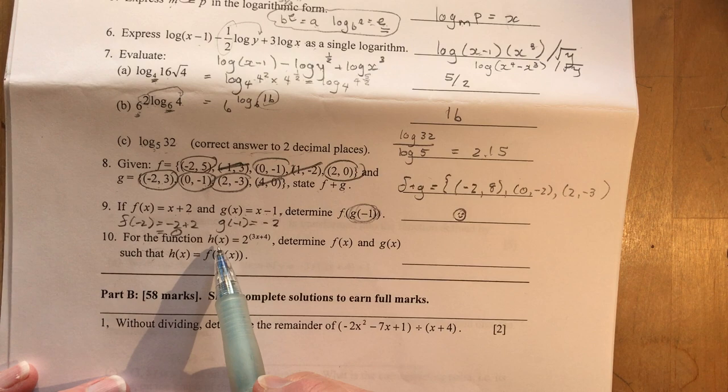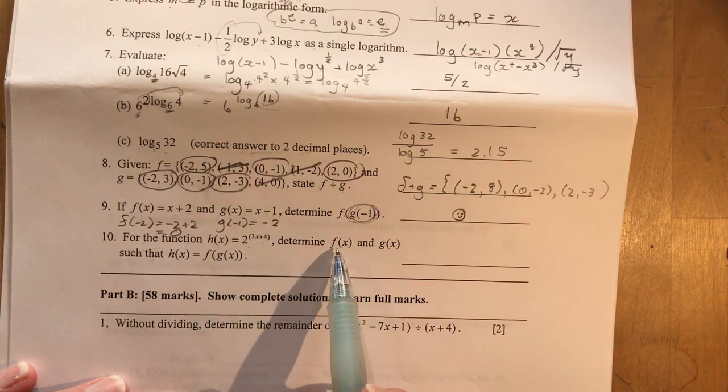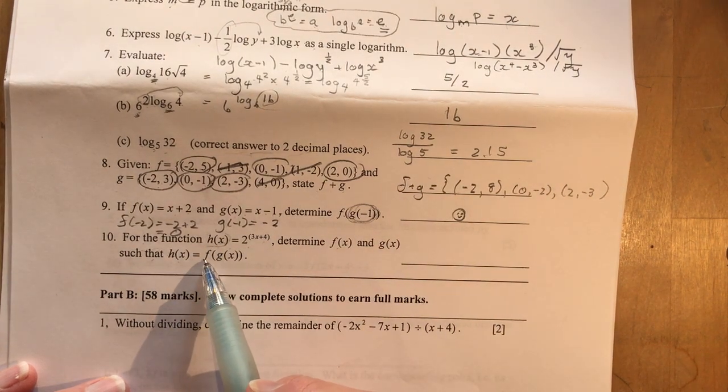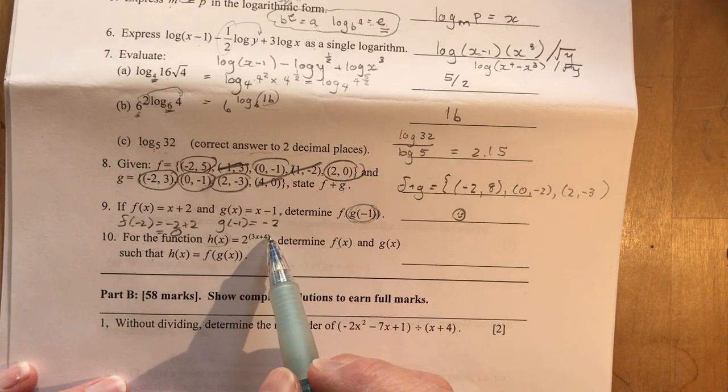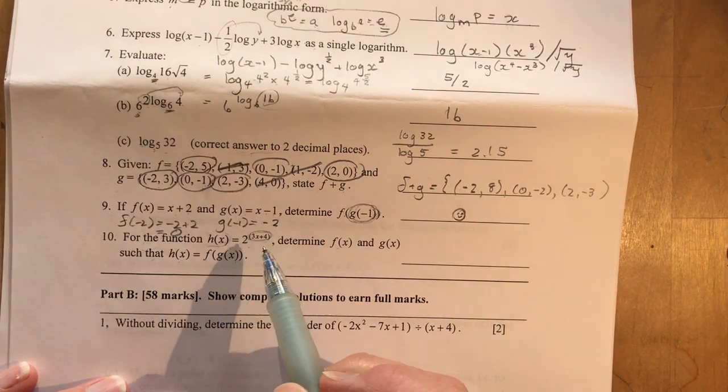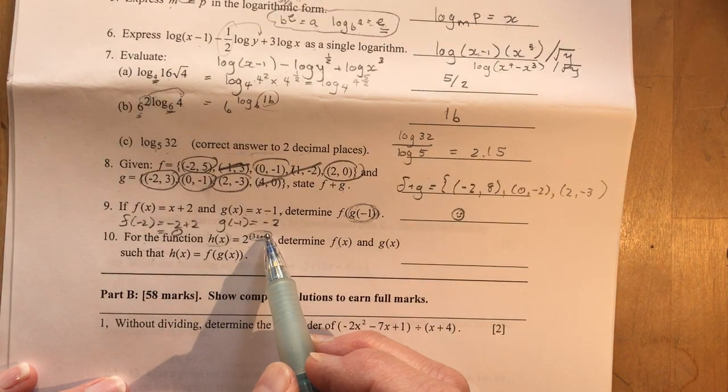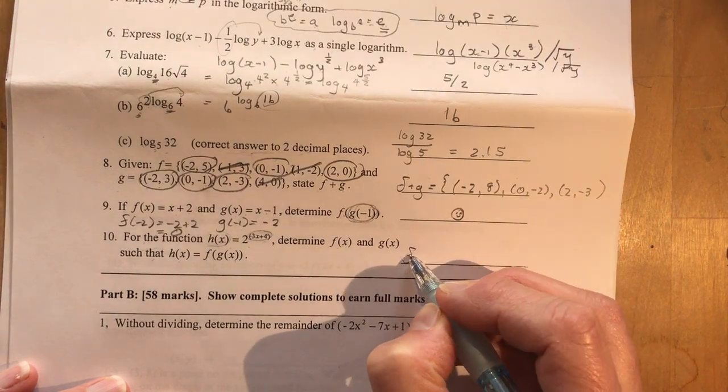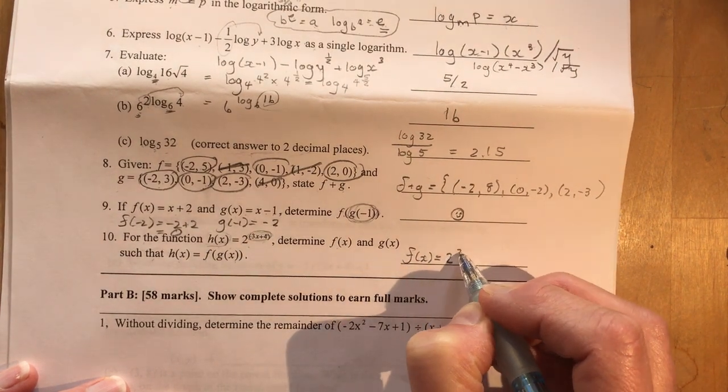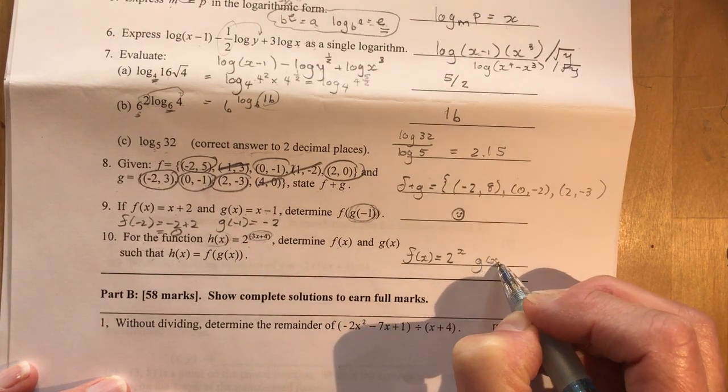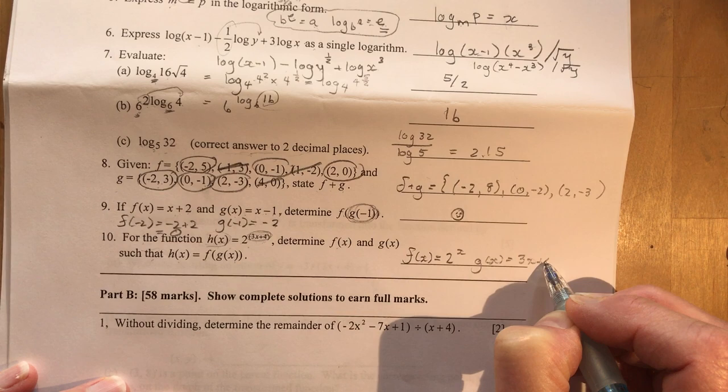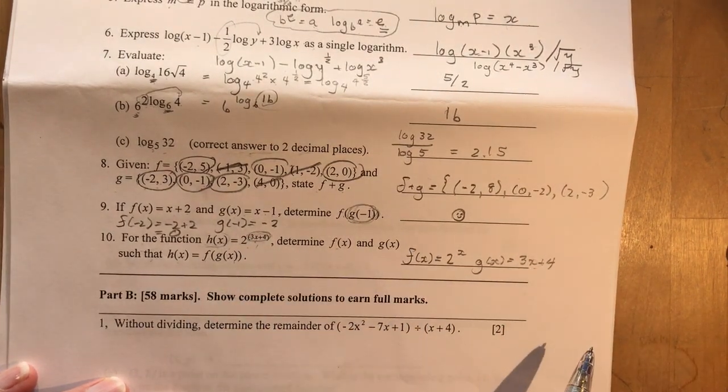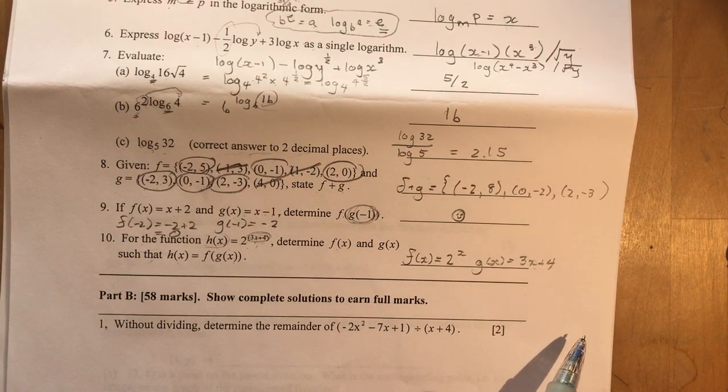Okay. And number 10 for the function H at X equals 2 to the 3X plus 4. Determine F at X and G at X such that H at X, which is what we have here, is F at G at X. So we can use this little exponent as our G at X. And if I took that out and replaced it with an X, that would mean that F at X could be 2 to the X. So if F at X equals 2 to the X and G at X is equal to 3X plus 4. So you can see if I put F at this, I would get right back to that.